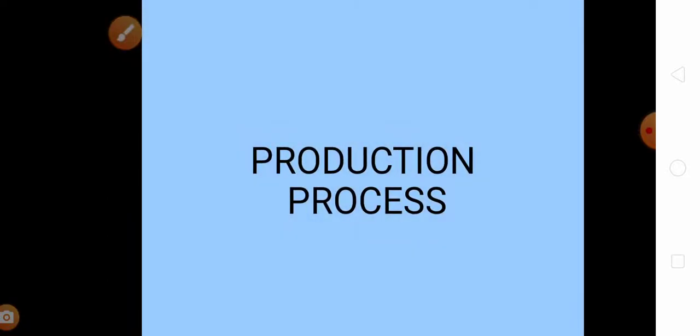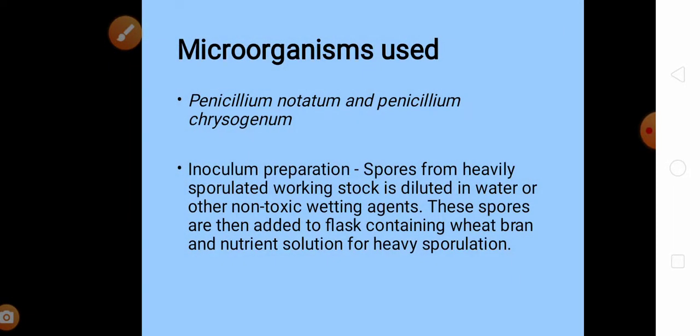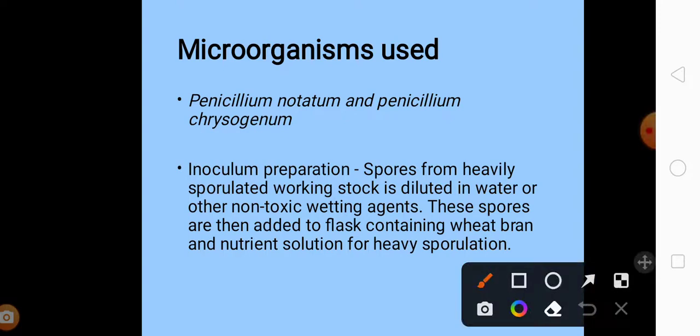Next we move on to the production process. The first thing that we will discuss is what microorganisms are used for its production. Penicillium notatum and Penicillium chrysogenum are the widely used microorganisms for penicillin production.